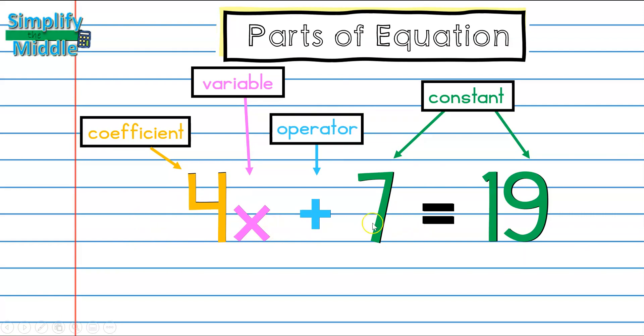Inside our equation here, we have terms. A term would be an example like 4x, a coefficient with a variable, 7, which is just a constant that's by itself, or we could also have just a variable that's by itself.